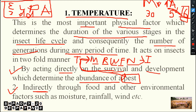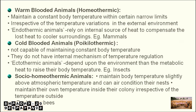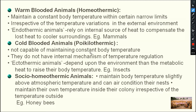So those are the effects of temperature. Now we will understand how animals are categorized based on how they maintain their body temperature. Basically they are divided into two types, but one more type exists in the case of insects, so all total three types are there.